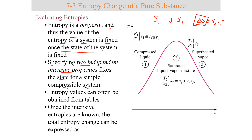A first or second law analysis is basically trying to find what the change in entropy of a system is attributed to. So if you want to find the entropy change for the system, it's going to be the result of entropy transferred to and from the system and the entropy generation.